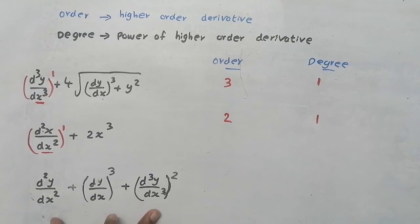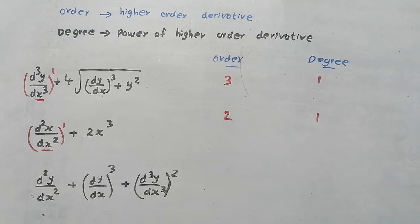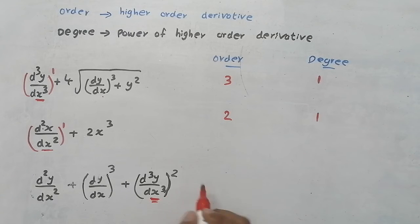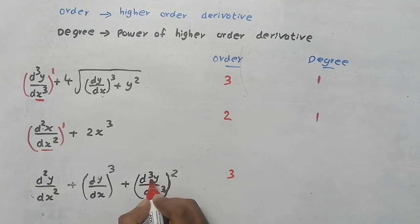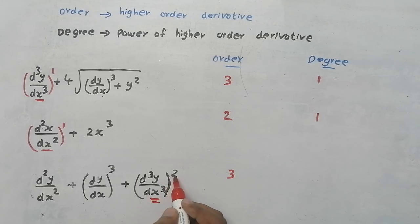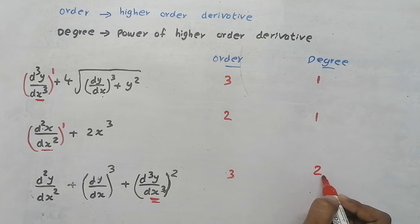Now look at this question. Which term is having the highest order? This is the second order, this is the first order, and this is the third order. So this is the term having the highest order — order is 3. Now what is degree? Degree is the power of the higher order term. This term is the higher order term, and the power of that term is 2, so degree is 2.